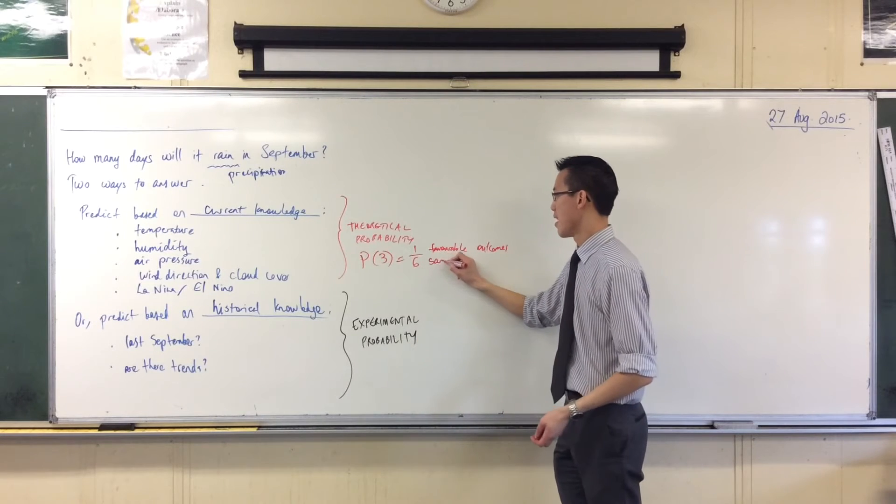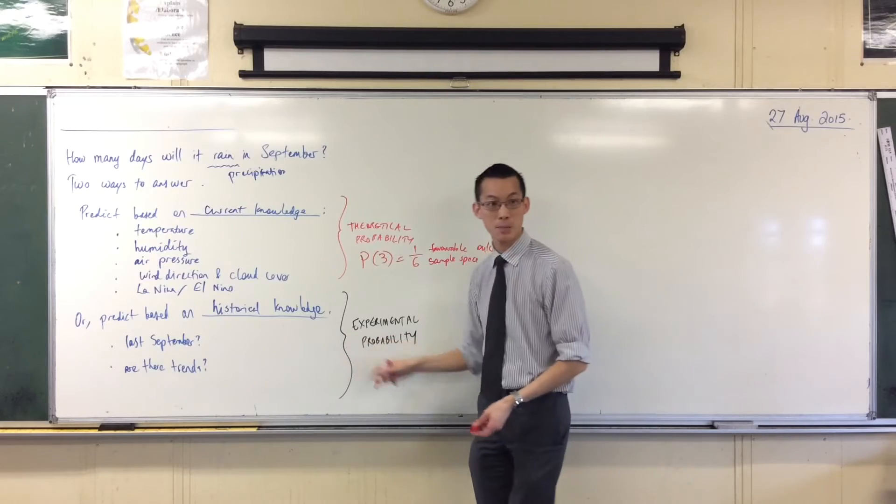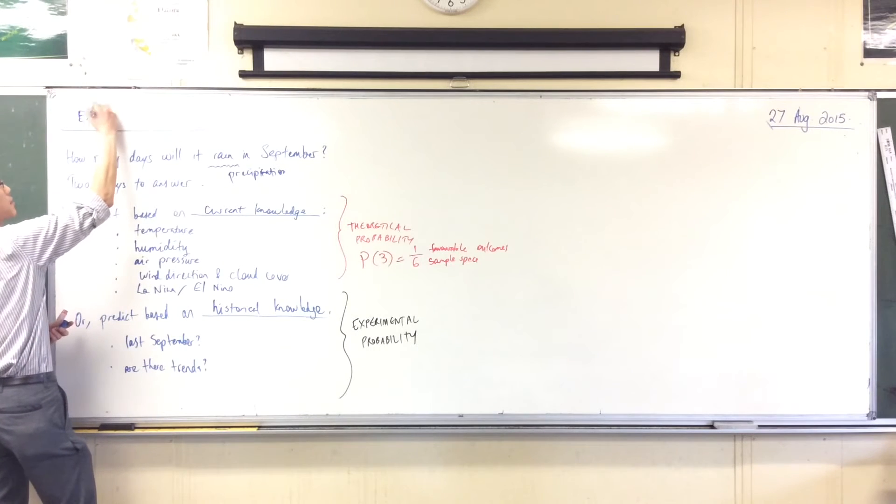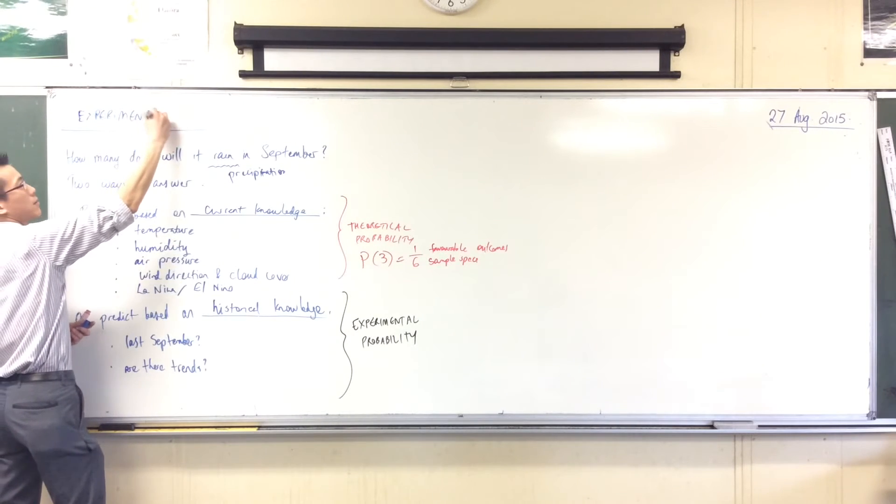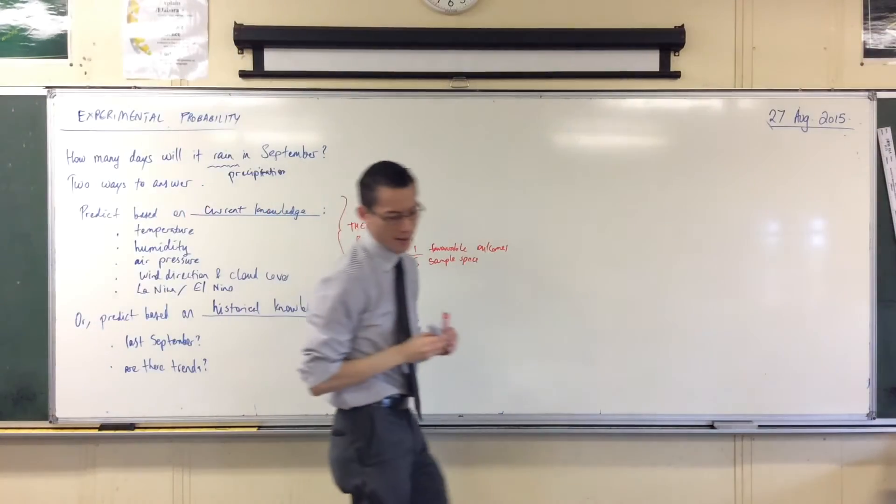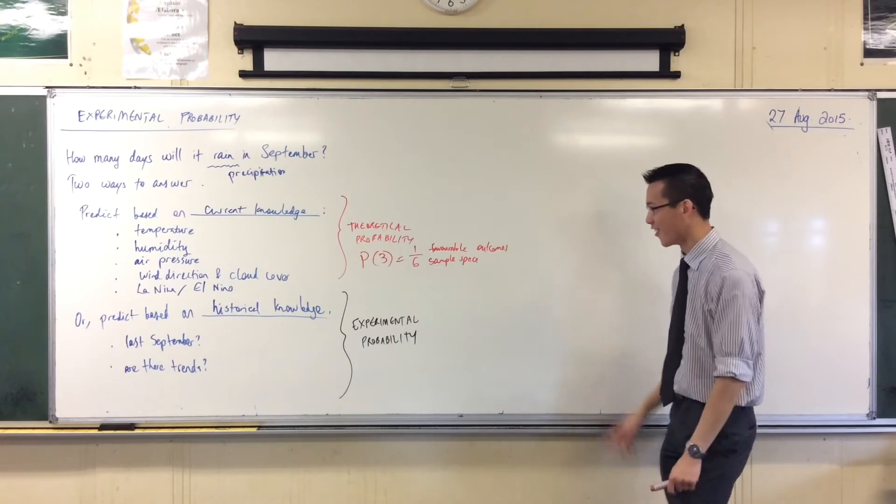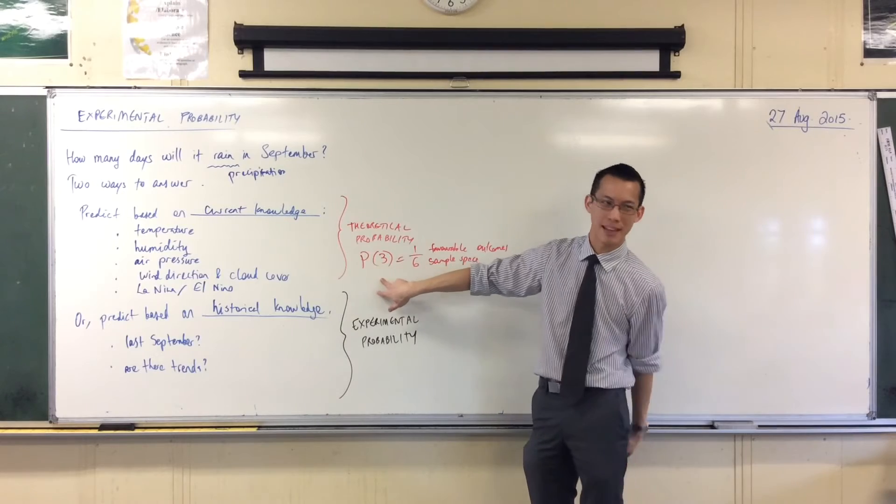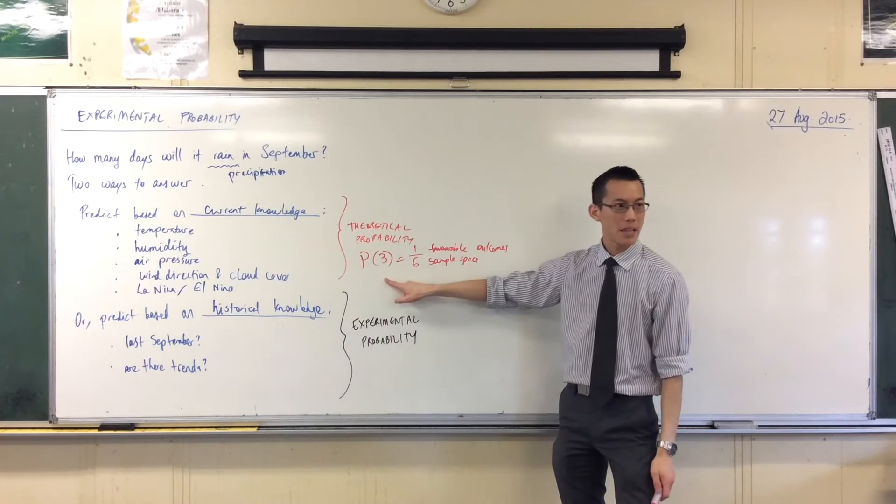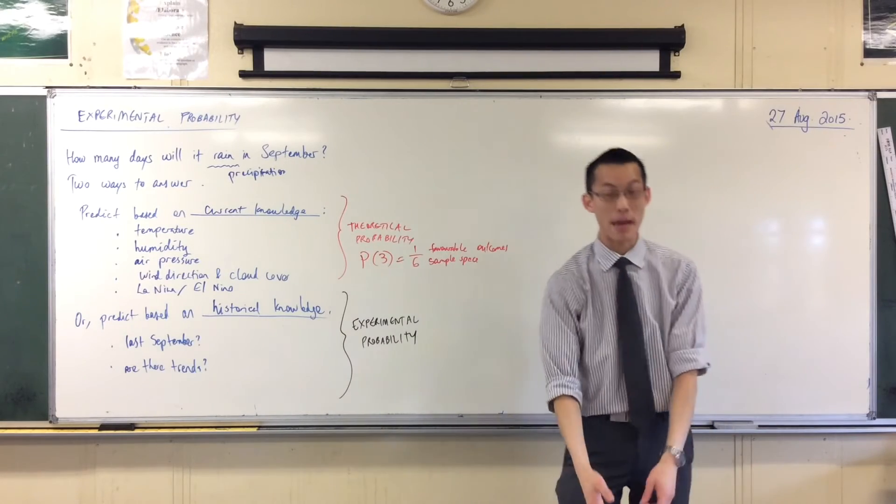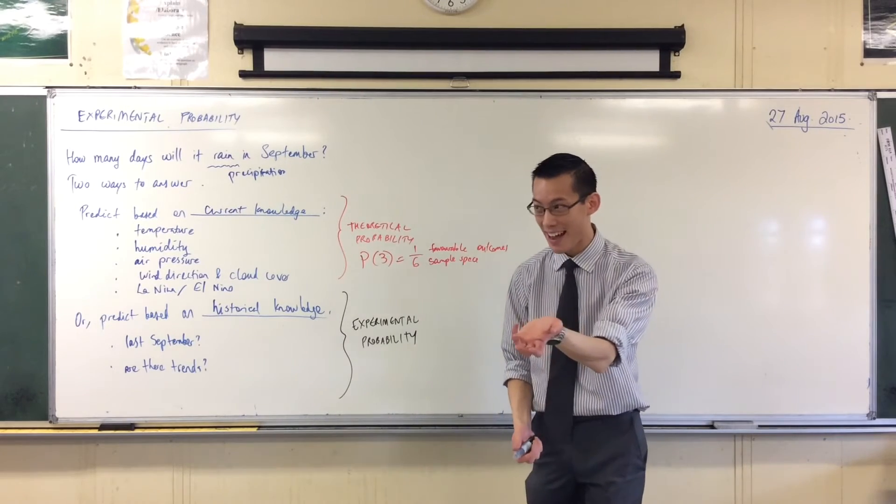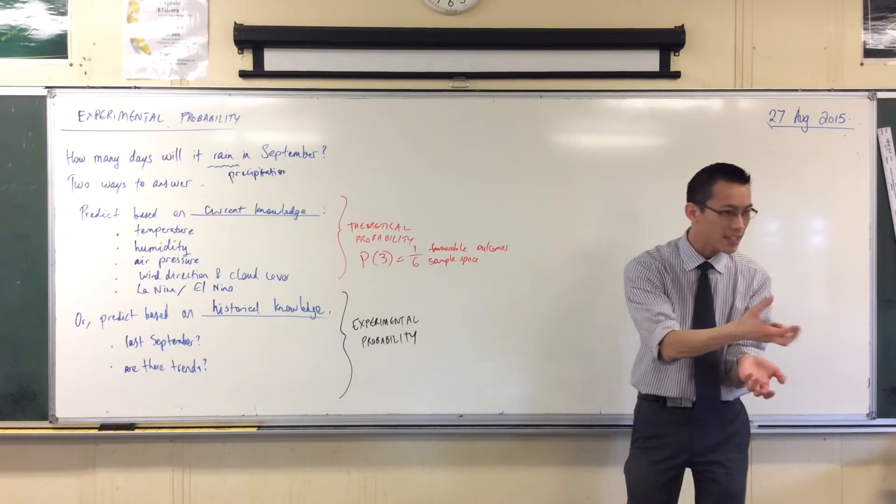Theoretically we would say one out of six, but experimentally, if I hand you a particular die and you think something's up with it—maybe it was loaded, which is the same as rigging it because it's weighted. Perhaps one of the sides has more plastic or metal or something heavy in it, so when you roll it that generally goes on the bottom.